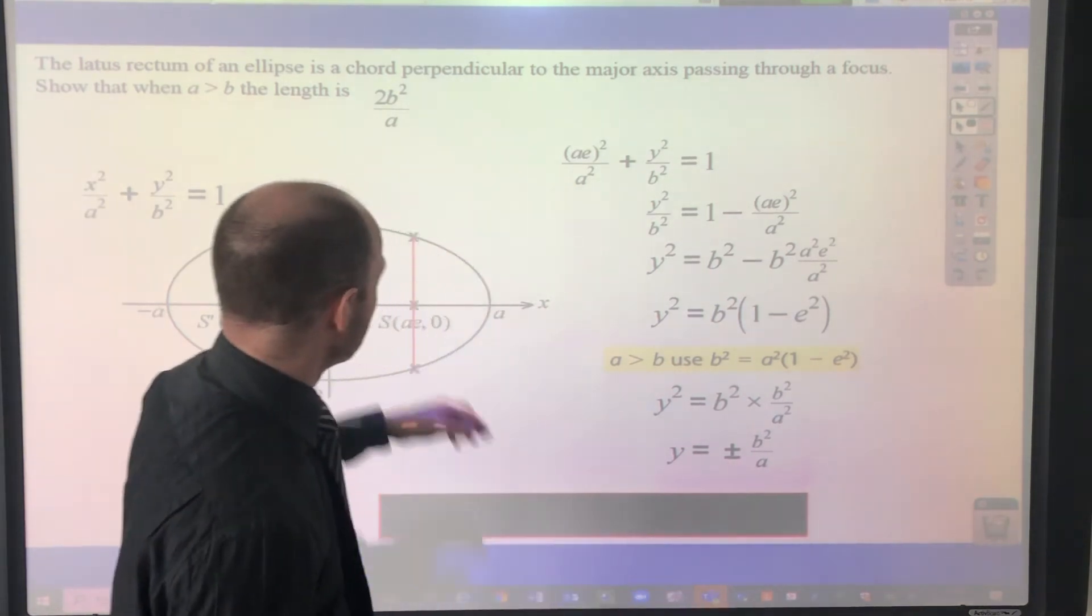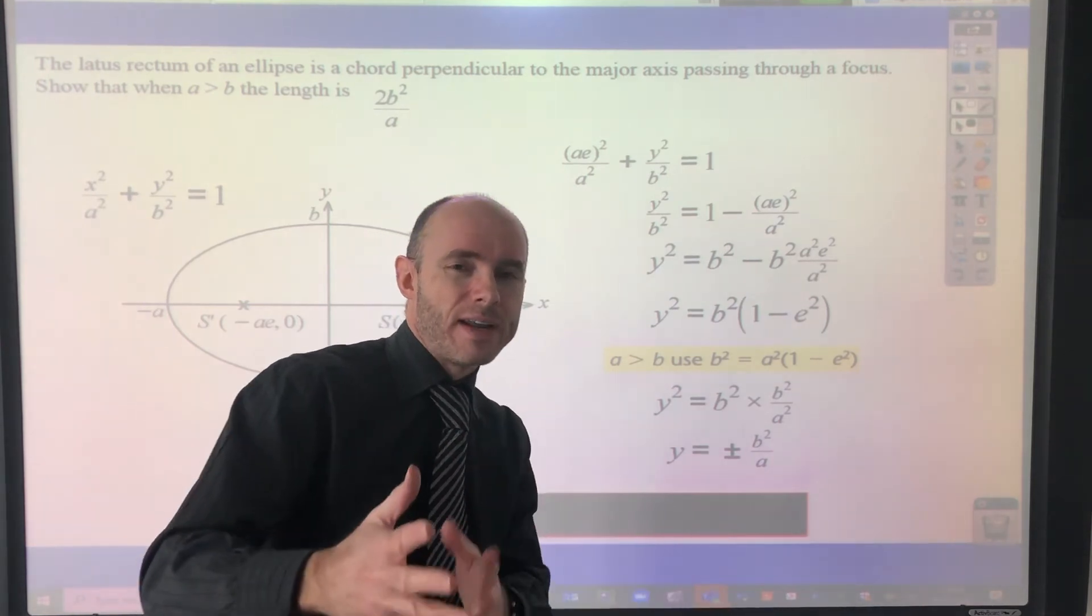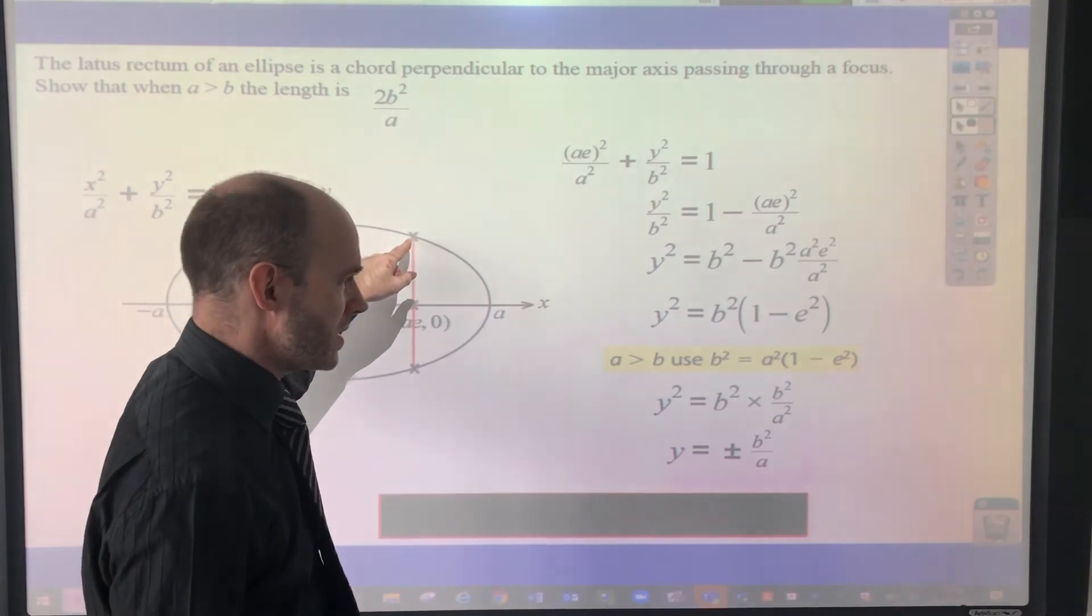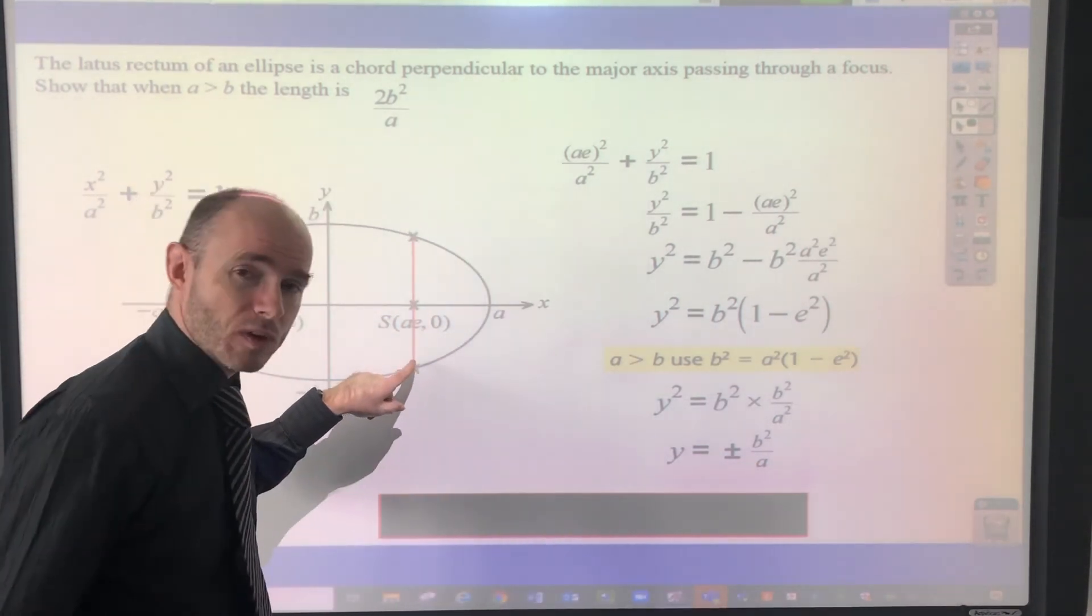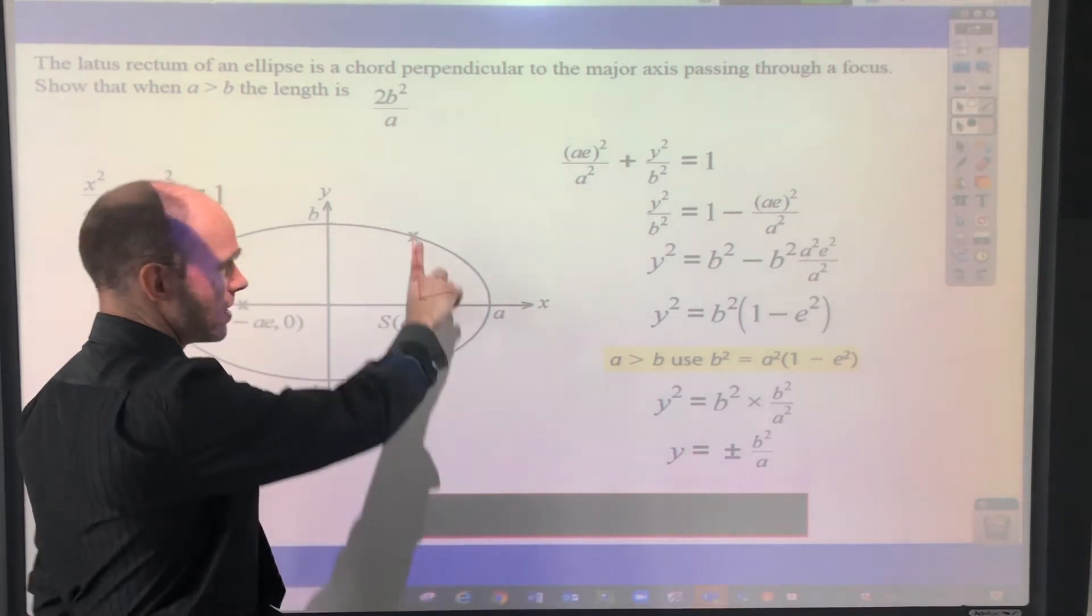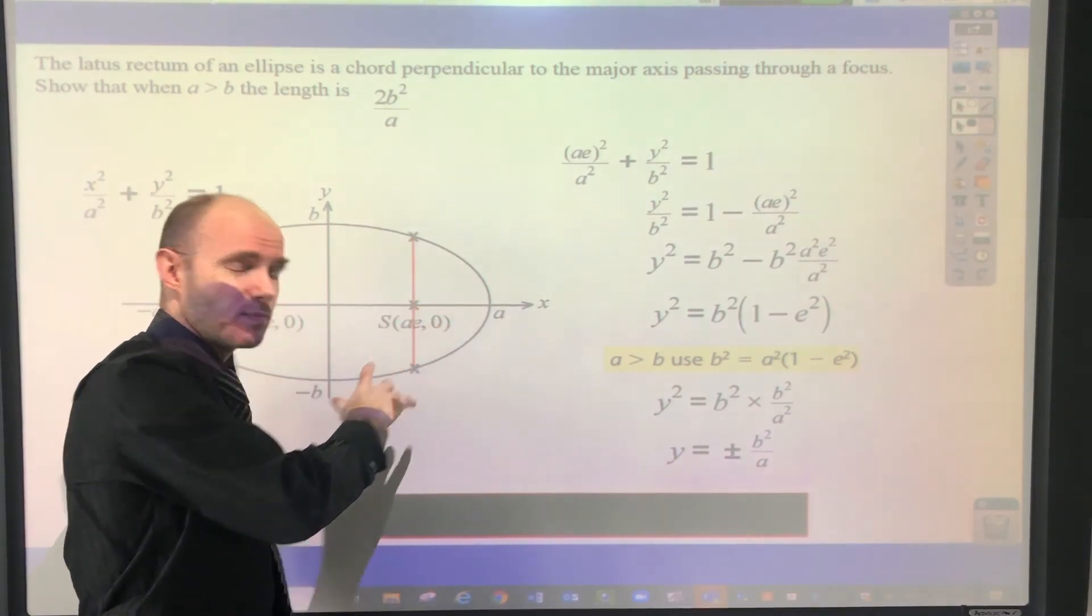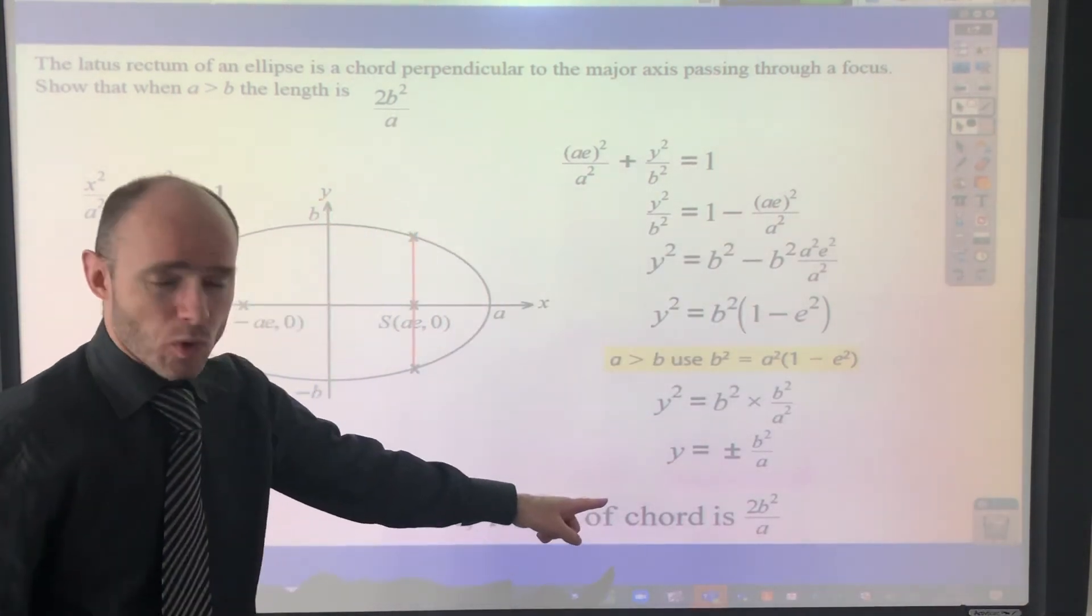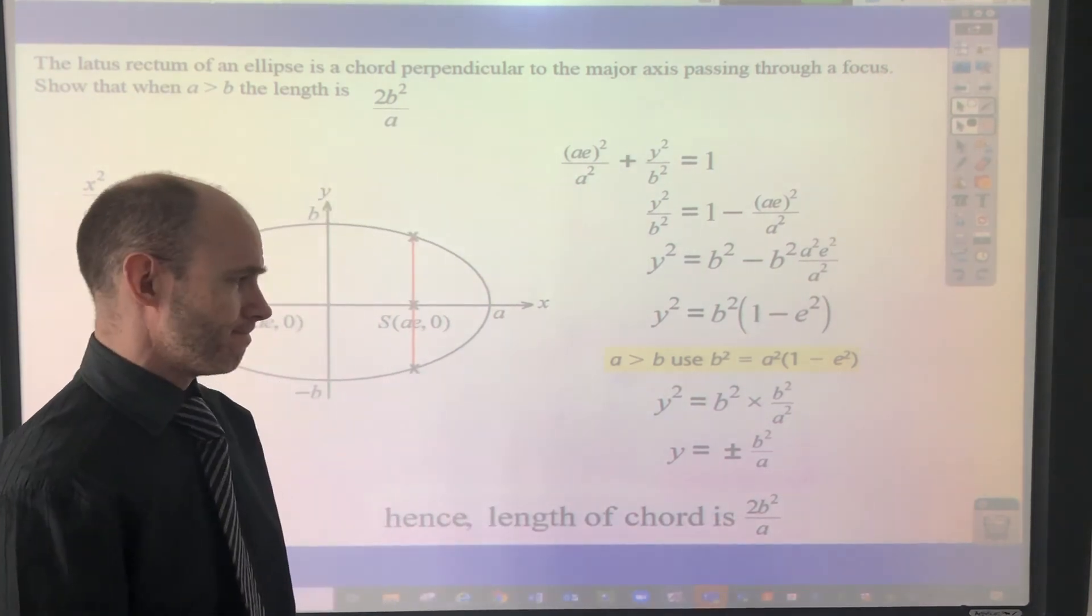What that means is that the y-coordinate, remember, that's what simultaneous equations are about, being able to find out what the coordinates of points of intersection are, the y-coordinate of that must be the positive of this, b squared over a, and the y-coordinate of that point must be the negative, which is negative b squared over a. And of course, you've got that is b squared over a. As a length, that is also b squared over a. Add the two together, it's enough just to conclude then that the length of the chord is two b squared over a.